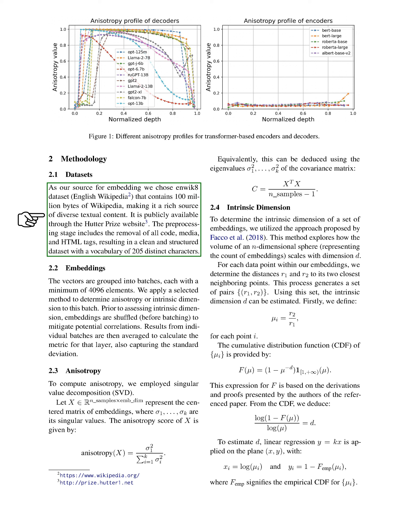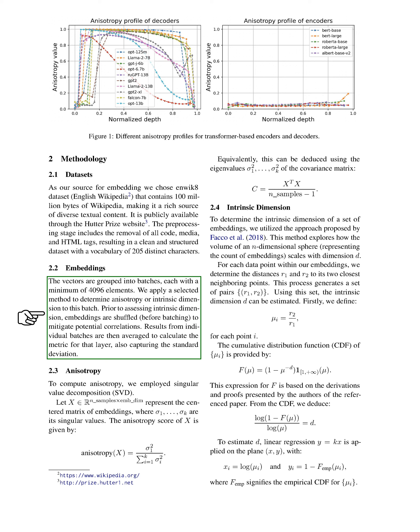For our research, we used the NWIC-8 dataset, which contains 100 million bytes of Wikipedia, making it a rich source of diverse textual content. The dataset is publicly available, cleaned and structured, with a vocabulary of 205 distinct characters. The vectors are grouped into batches, each with a minimum of 4096 elements. We apply a selected method to determine anisotropy or intrinsic dimension to each batch. Before assessing intrinsic dimension, embeddings are shuffled to mitigate potential correlations. Results from individual batches are then averaged to calculate the metric for that layer, also capturing the standard deviation.